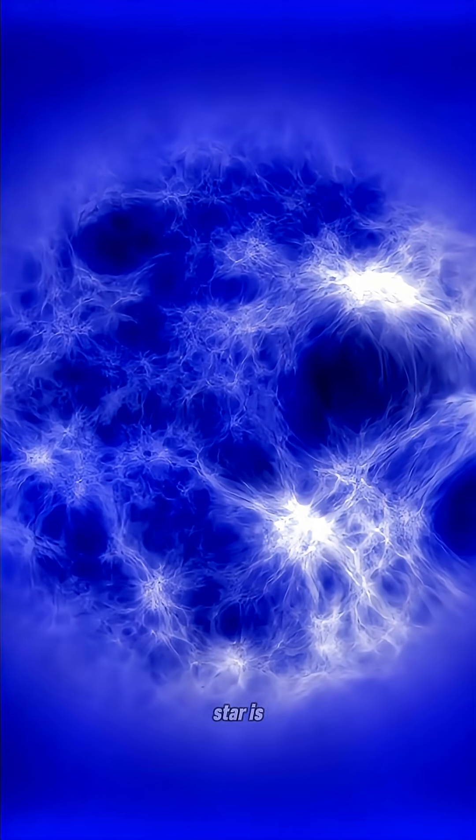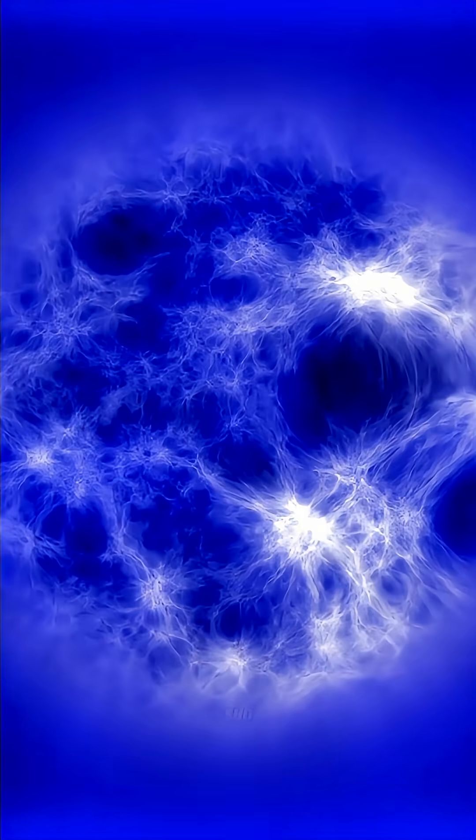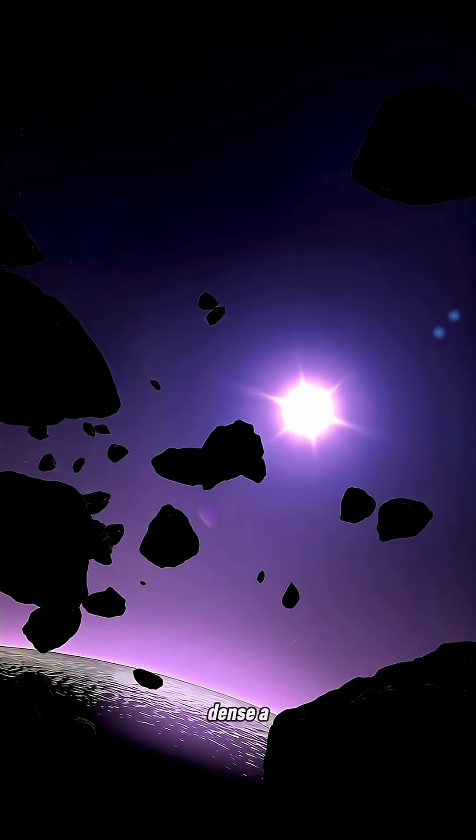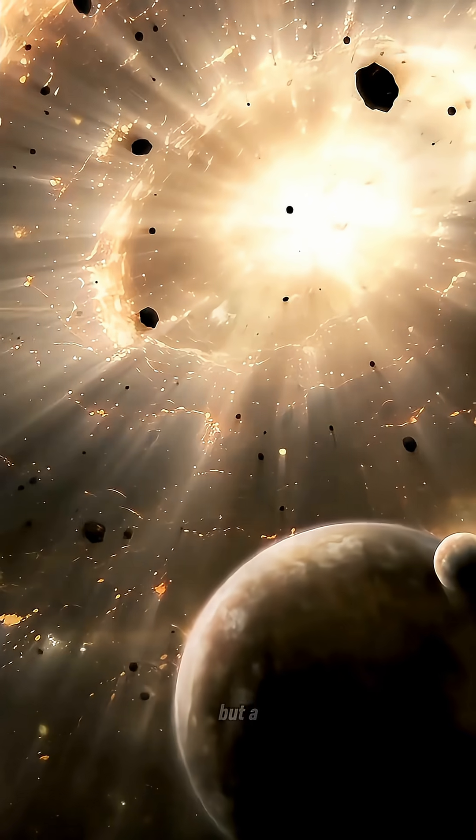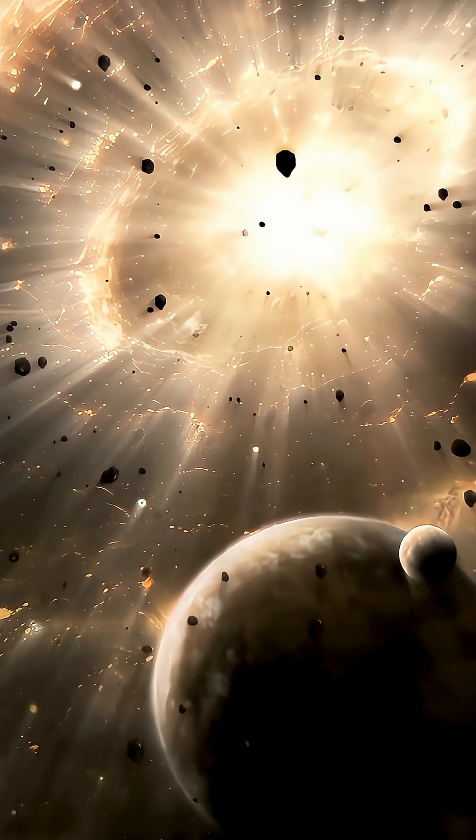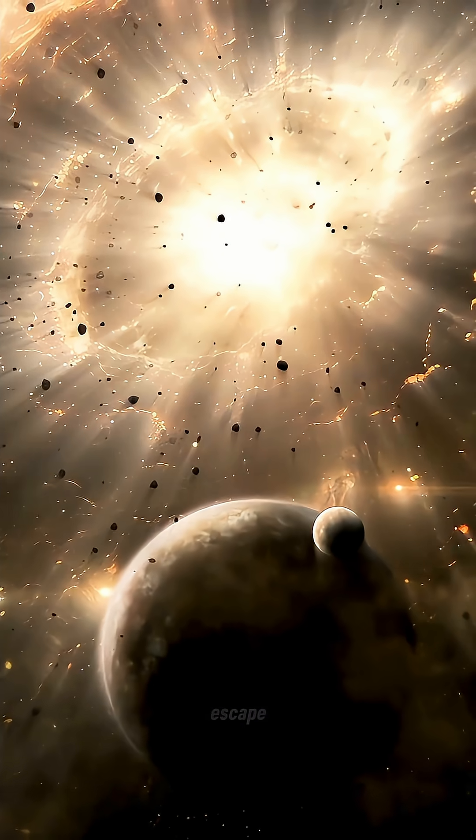A neutron star is a leftover core of a massive star, just 20 kilometers wide but heavier than our sun. It's so dense, a sugar cube of its matter would outweigh Mount Everest. But a black hole goes further. It's not just dense, it's a point of infinite gravity. Not even light can escape.